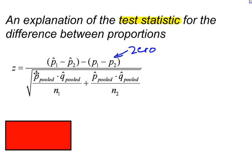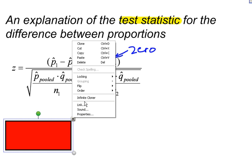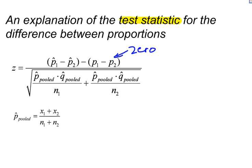Well, now we get down here to the standard error, and you see this p hat pooled and q hat pooled. What does that mean? Well, p hat pooled is basically found using another formula, which is this one right here.